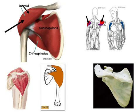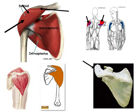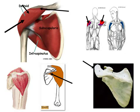It arises from the anterior border and upper surface of the lateral third of the clavicle, from the lateral margin and upper surface of the acromion, and from the lower lip of the posterior border of the spine of the scapula, as far back as the triangular surface at its medial end.